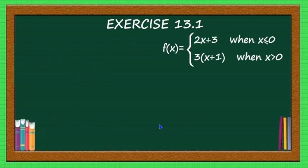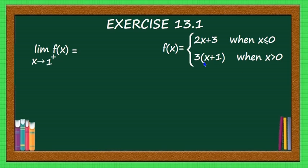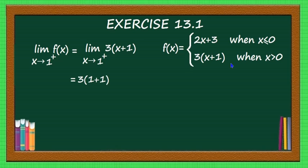Similarly, you have to find limit extending to 1 plus of f(x). Here 1 plus means slightly greater than 1, which is positive, which is greater than 0. When x is greater than 0, the function is defined as 3 into x plus 1. That is equal to limit extending to 1 plus of 3 into x plus 1. It is a polynomial function, just put x equal to 1: we will have 3 into 1 plus 1, that is 3 into 2, which is equal to 6.